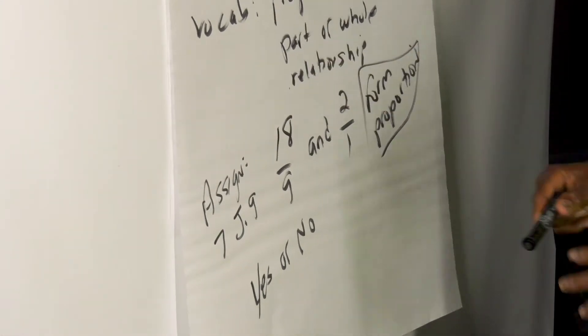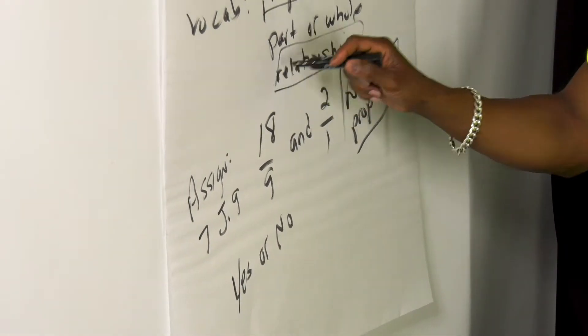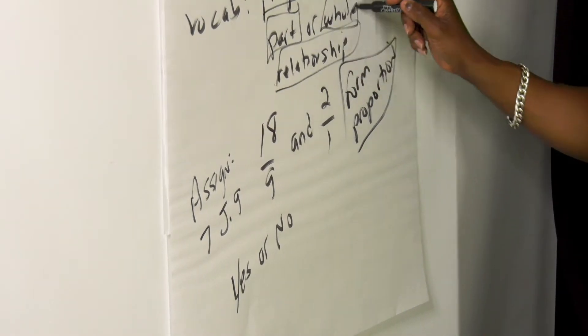So the vocabulary here: proportion is, is it a part of the whole or is it in relationship to the whole itself? Is it part of it or is it equal to the whole itself?